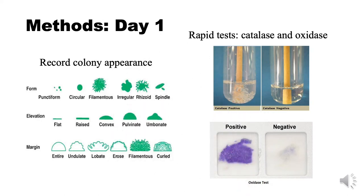On day one, colony appearance is recorded from all agar plates that were incubated on day zero. This involves describing the shape, size, colour, and texture of the colonies, as well as any hemolysis on the blood agar. Rapid tests are then performed using colonies from the agar plates. The catalase test is used to detect the enzyme catalase in bacteria. A small inoculum of bacteria is mixed into hydrogen peroxide solution, and the rapid production of bubbles indicates the organism is catalase positive.